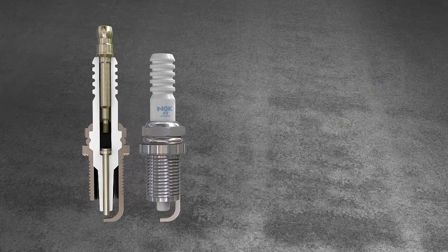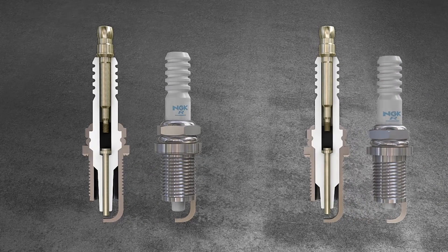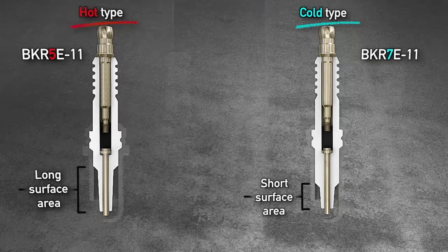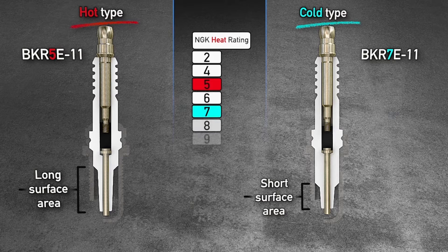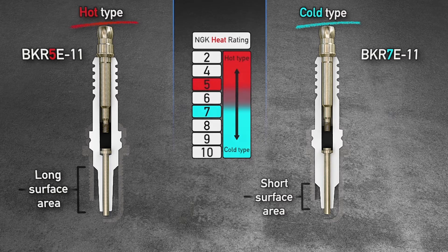The exterior of a hot and cold spark plug is identical. However, by inspecting the internal design features as shown in these section images, the differences can be seen. The key difference is the surface area, which is long for a hot spark plug and short for a cold spark plug.